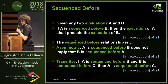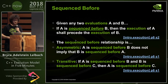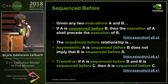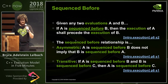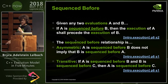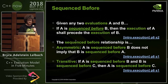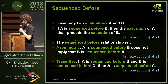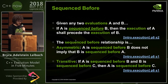Sequenced before: given any two evaluations A and B, if A is sequenced before B, then the execution of A shall precede the execution of B. The sequenced-before relation is asymmetric — if A is sequenced before B, it does not imply that B is sequenced before A. It's transitive: if A is sequenced before B and B is sequenced before C, then A is sequenced before C. And pairwise.